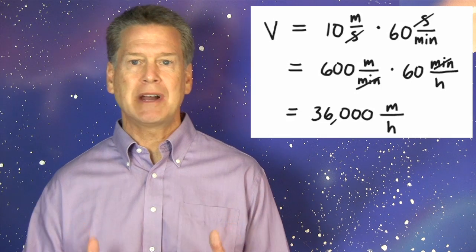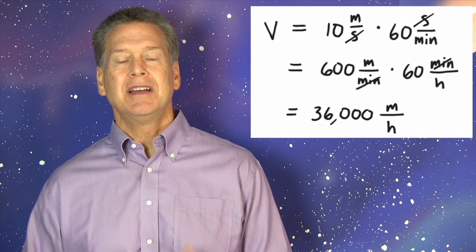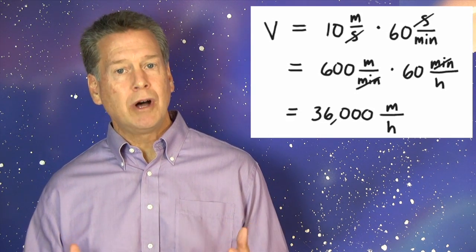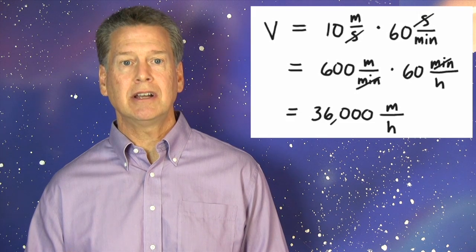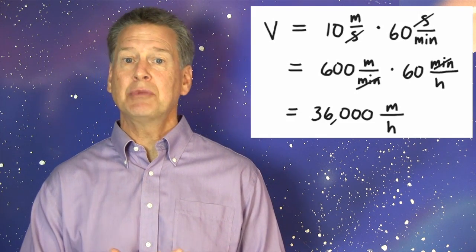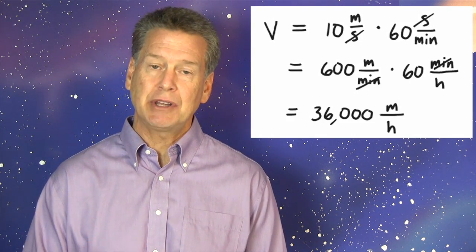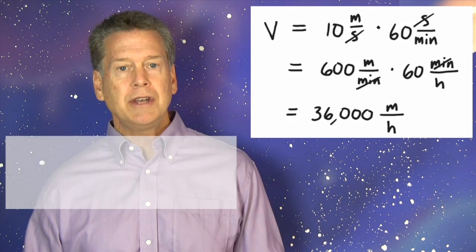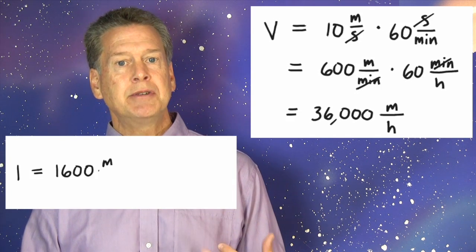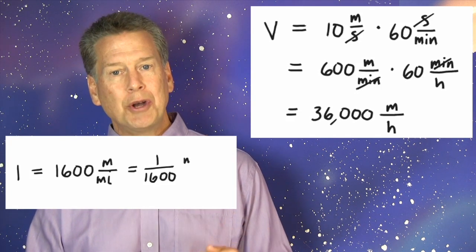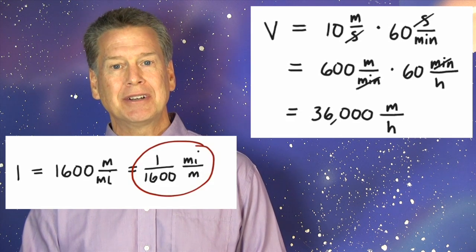We want miles per hour, not meters per hour. So we need to multiply by the number 1, that is, by a conversion factor, that will cancel meters in the numerator and put miles in its place. 1 equals 1,600 meters per mile equals 1 over 1,600 miles per meter.